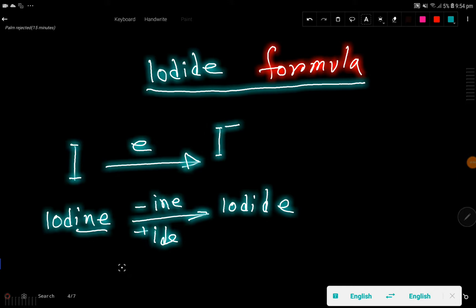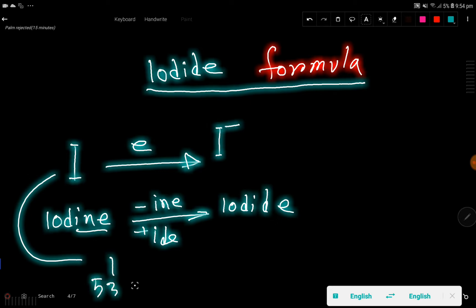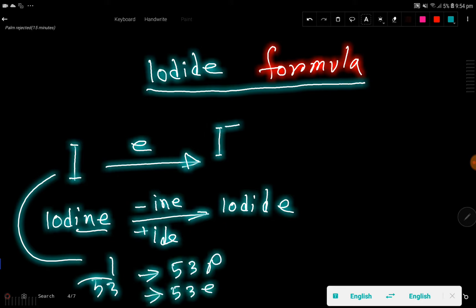The atomic number of iodine is 53, so it will have 53 protons and 53 electrons. In iodide you have...